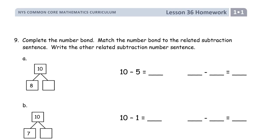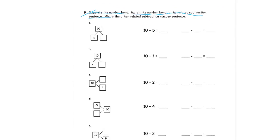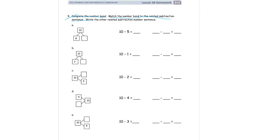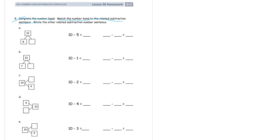Lesson 36 homework, we're on part 9. This is a lot to do here. But we're working with parts of 10, so it's going to go fast, especially if you know them. Complete the number bond, and then match the number bond to the related subtraction sentence. So here's our related subtraction sentence. Oh, we've got a whole page of these, so let me zoom out.